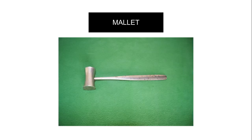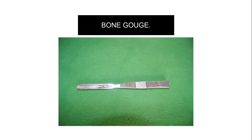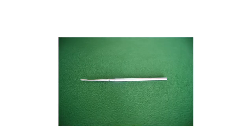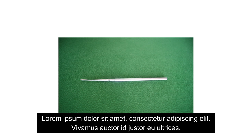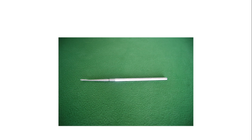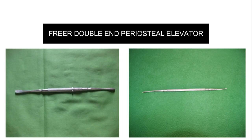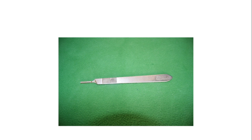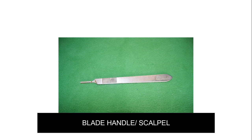This is the hammer and mallet — both are used together to remove bone. This is the septal chisel. This is the Freer periosteal elevator, used in elevation of the periosteum — for example in septoplasty. This is the double-ended Freer periosteal elevator. This is the blade handle — also called the scalpel — with the blade, used for making incisions in surgery.